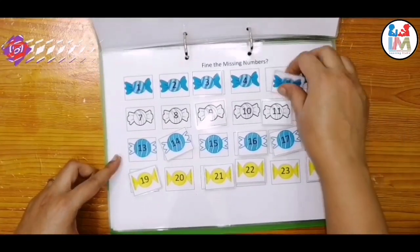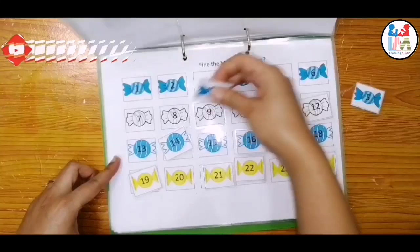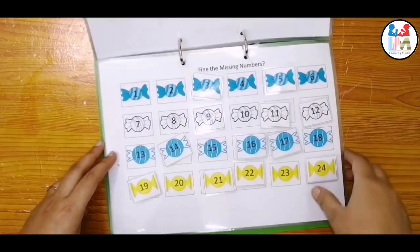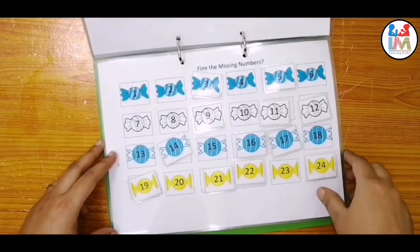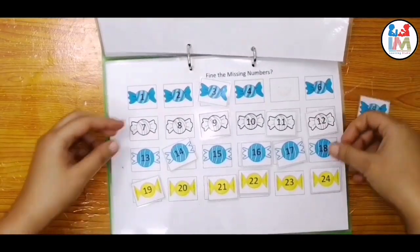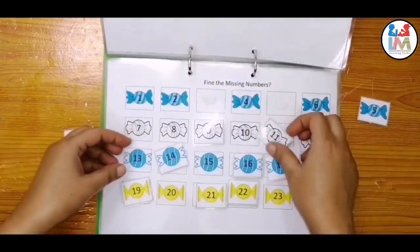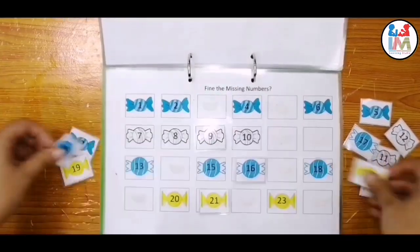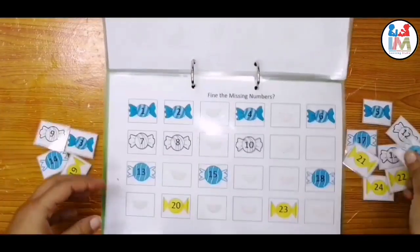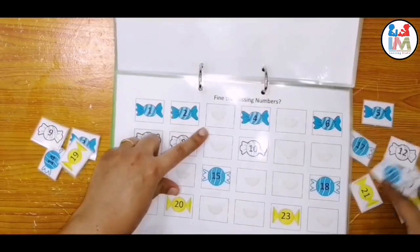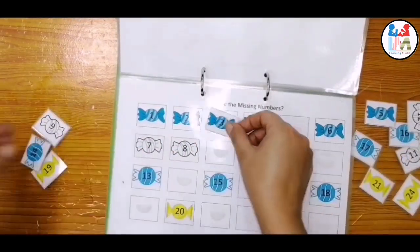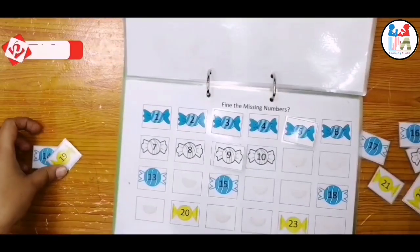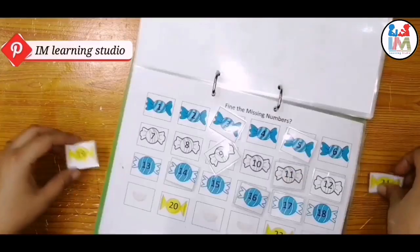Next, you can see on your screen this belongs to missing numbers. Next, child has to make a pattern: 11, 12, so on.